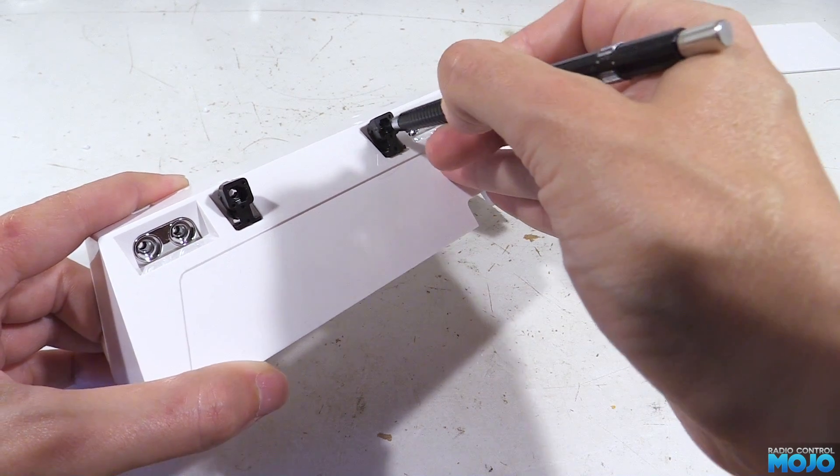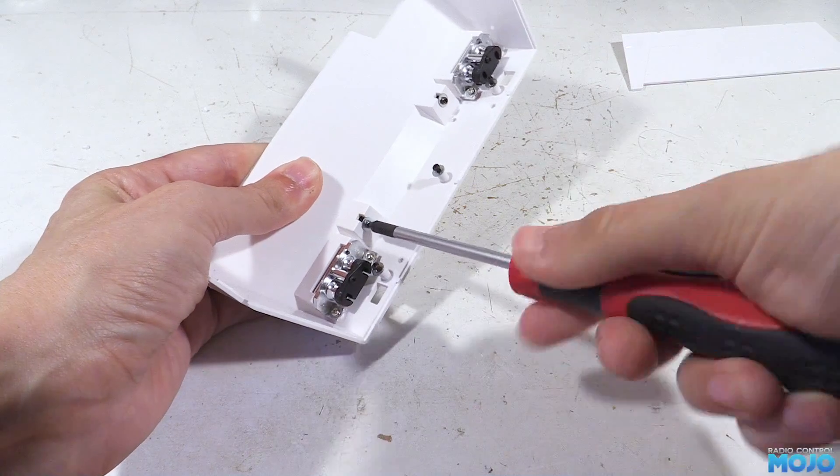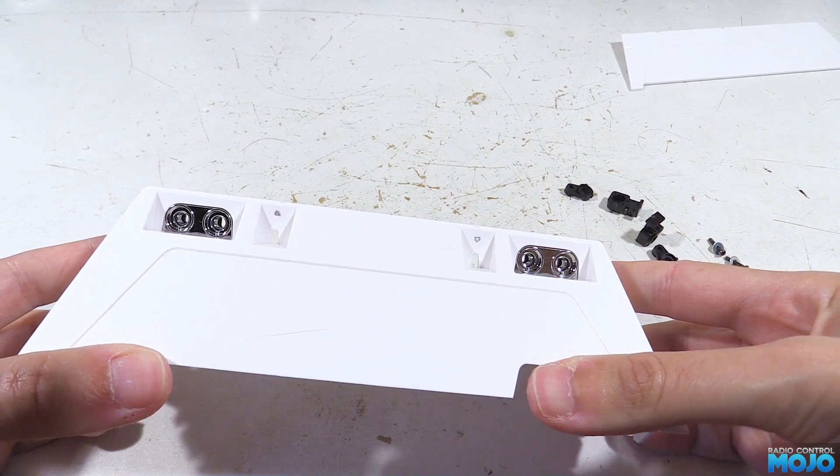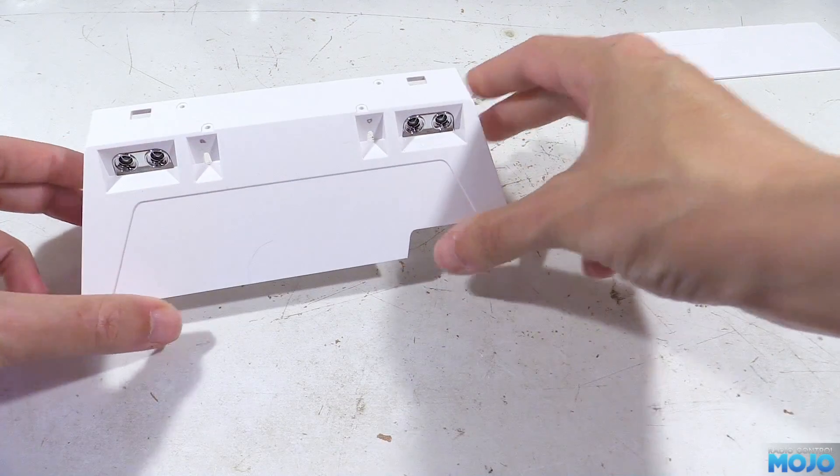Next, before we remove anything else we need to mark where the back of the work light pods are on the box. A pencil works well as the hole in the back is quite small.